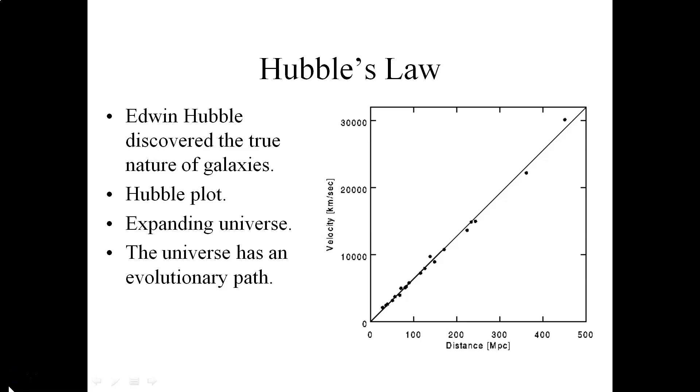Now that you've seen that demonstration video, hopefully you've got a sense that essentially Hubble's law, the linear relationship of this graph, implies that the universe is expanding. It also implies that the universe itself has an evolutionary path. And here's how you can begin to understand that.